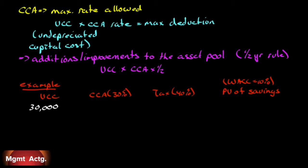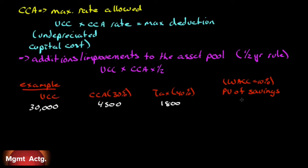Everything works better with an example. We buy an asset for $30,000 — that is our undepreciated capital cost. The government says the CCA rate for that type of asset is 30% per year, and the company has a 40% tax rate. In year one, 30% of $30,000 is $9,000, but because of the half-year rule, our CCA allowance is only $4,500. We can deduct $4,500 off our income; since we pay 40% tax, that saves us $1,800 in tax. Discounting $1,800 back one year at 10% gives us a net present value of $1,636.